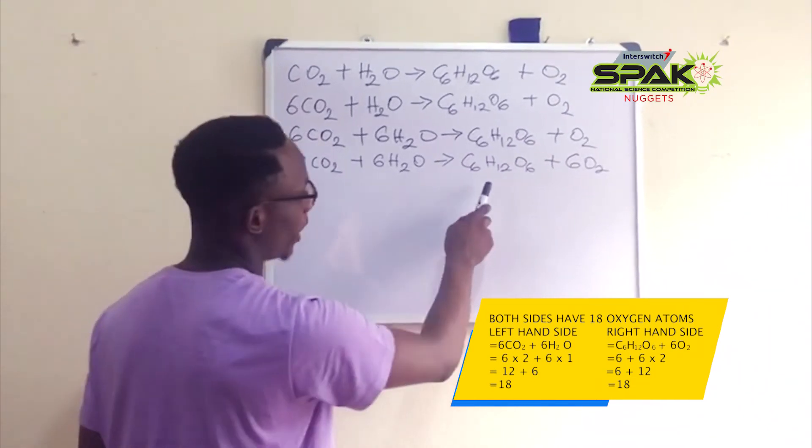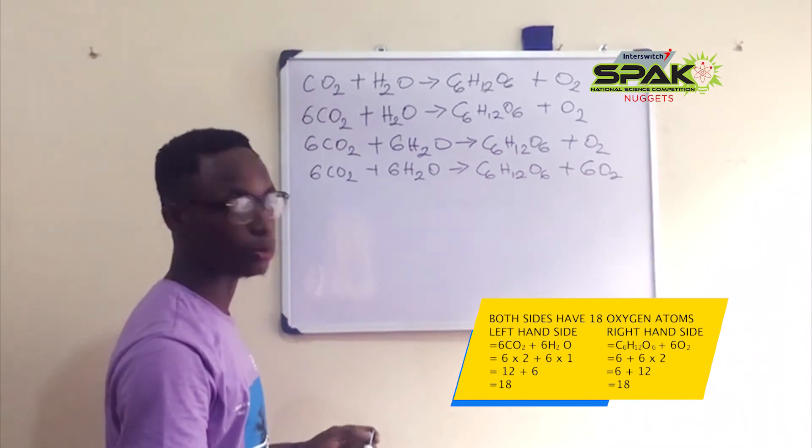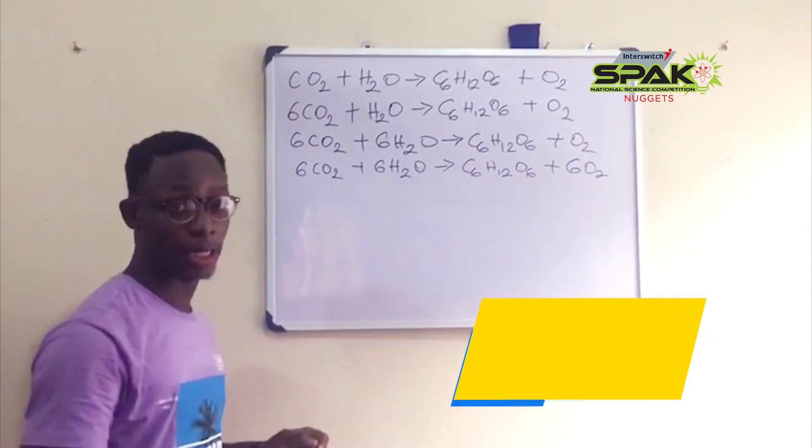And on the right hand side we have 6 plus 6 times 2, that is 6 plus 12, that is 18 oxygen atoms. So our equation is balanced.